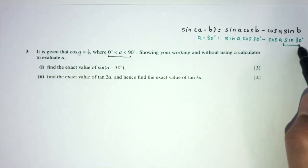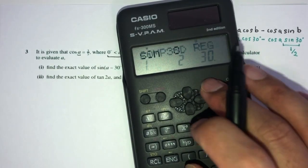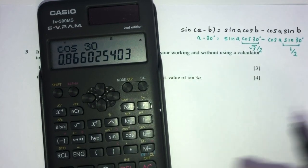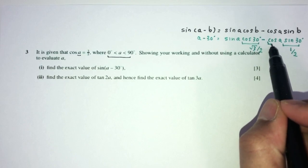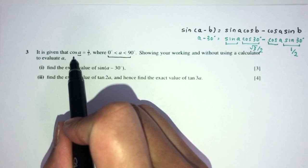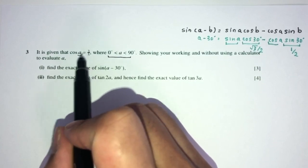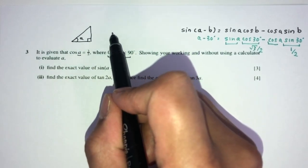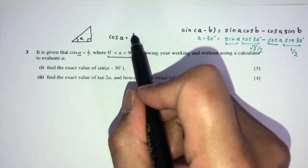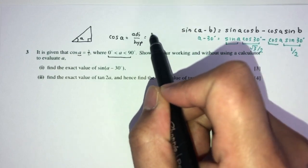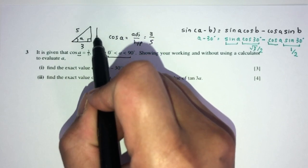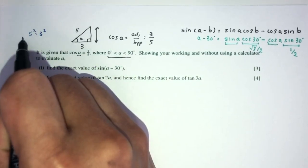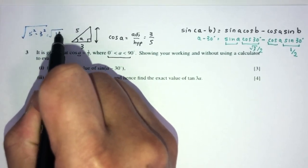We know cos A but we need to find sin A. We use our right-angle triangle knowledge: cos A equals adjacent over hypotenuse equals 3 over 5, so the adjacent side is 3 and the hypotenuse is 5. To find the opposite side, use Pythagoras: root of (5 squared minus 3 squared) equals root of (25 minus 9) equals root 16 equals 4. So sin A equals opposite over hypotenuse equals 4 over 5. Now substituting back: sin(A minus 30) equals (4/5)(root3/2) minus (3/5)(1/2), which gives 4 root 3 over 10 minus 3 over 10, which equals (4 root 3 minus 3) over 10.